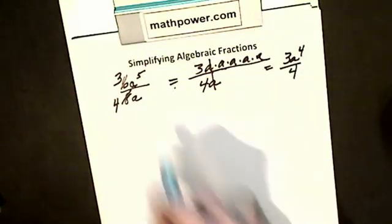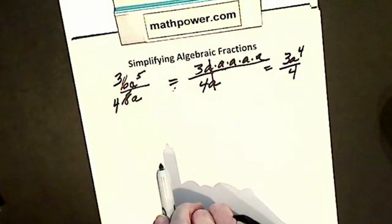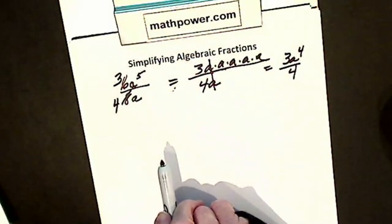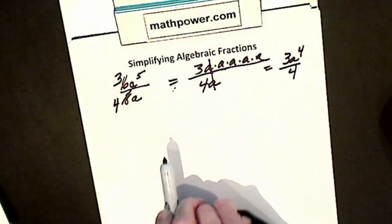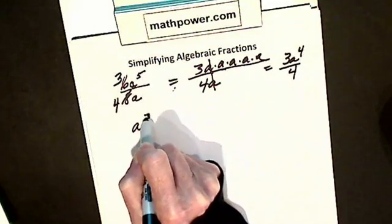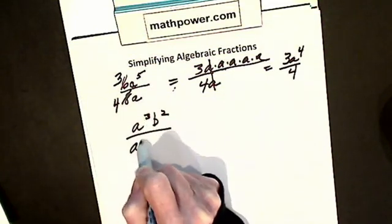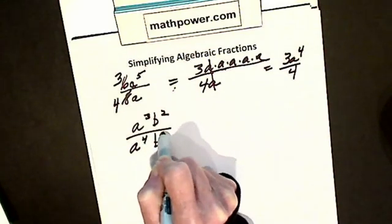So basically we subtracted exponents and we put our letter, or our variable, where the higher exponent is. Let's say I have one like this: a to the 3rd over b squared, over a to the 4th over b cubed.